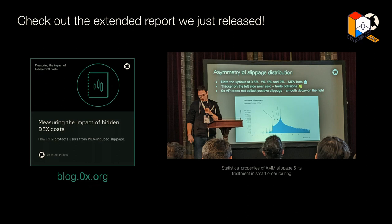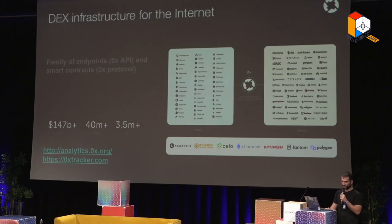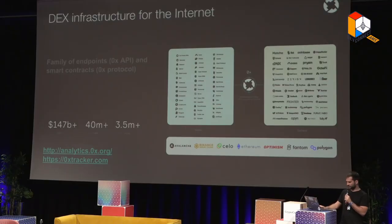As a bit of background, 0x is basically a family of endpoints and smart contracts aimed to help DEX applications plug into this world. We build DEX infrastructure for the internet and connect tens of applications with tens of liquidity sources. We've evolved a lot since 2017 — right now we have a DEX aggregator infrastructure available on seven blockchains, connecting hundreds of thousands of users with liquidity sources.